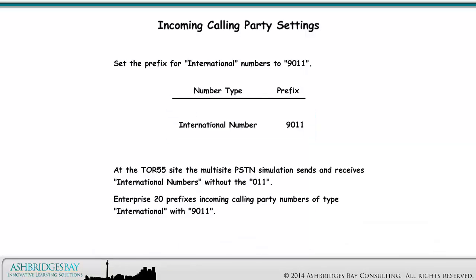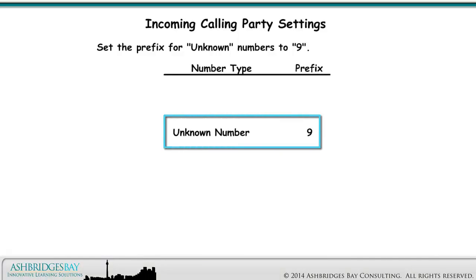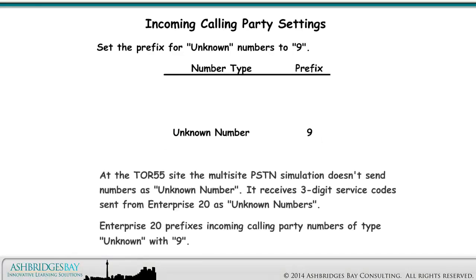At the Toronto 55 site, the multi-site PSTN simulation sends and receives national numbers as 10-digit numbers without the 1. Enterprise 20 prefixes incoming calling party numbers of type national with 91. The simulation sends and receives international numbers without the 011, so Enterprise 20 prefixes incoming calling party numbers of type international with 9011. Set the prefix for unknown numbers to 9. The multi-site PSTN simulation receives 3-digit service codes sent from Enterprise 20 as unknown numbers, so Enterprise 20 prefixes incoming calling party numbers of type unknown with 9.